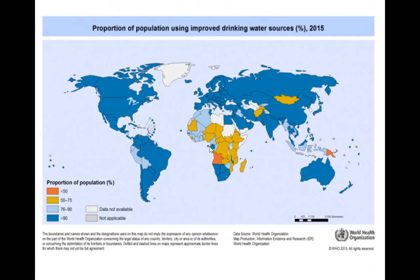In seven countries — Angola, Kenya, Madagascar, Papua New Guinea, Sierra Leone, South Sudan and Tajikistan — many people still rely on water collected directly from rivers, lakes and irrigation canals for drinking, which causes these people to face increased risks to their health and well-being.